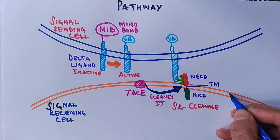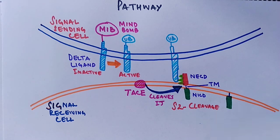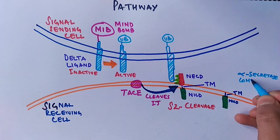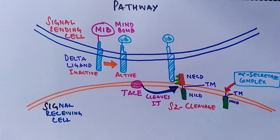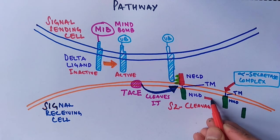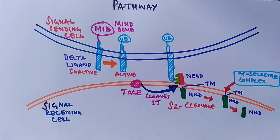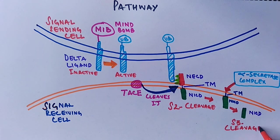S2 cleavage is followed by S3 cleavage, wherein the gamma secretase complex, a transmembrane protein from the ADAM family, cleaves off the intracellular domain NICD from the transmembrane domain. After this, it gets released into the cell.